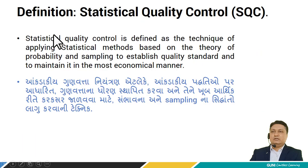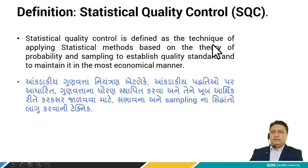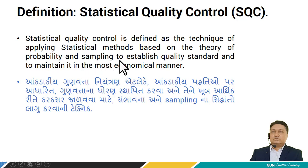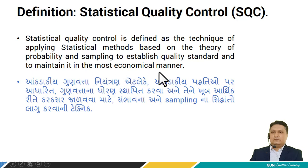Let's see the definition of statistical quality control. Statistical quality control is defined as the technique of applying statistical methods based on the theory of probability and sampling to establish quality standards and to maintain them in the most economical manner.